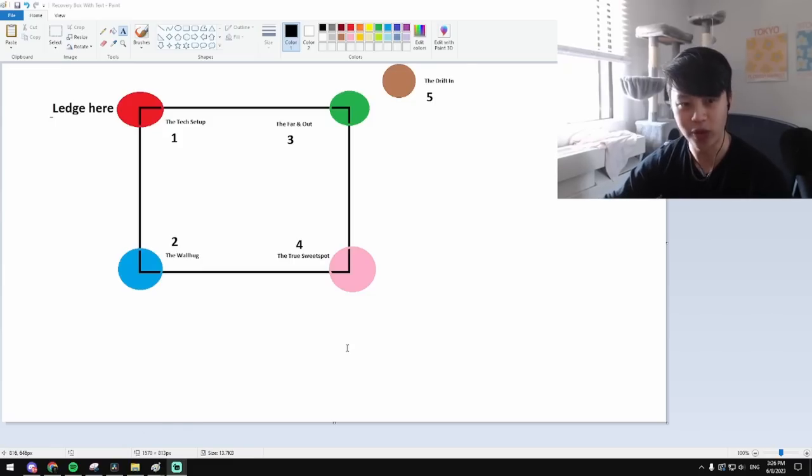Number two, the wall hug. This one is similar to the tech setup. It's just much lower. The only thing about this is that the wall hug is only useful on stages that you can hug a wall when you're low. So, that's to say, stages like Battlefield, Pokemon Stadium, and FD, most of the time you are not going to get a good wall hug for you to tech.